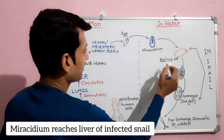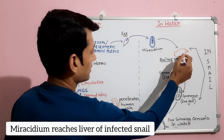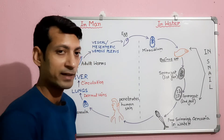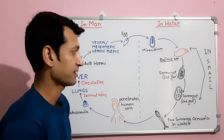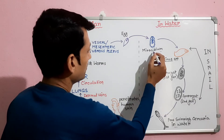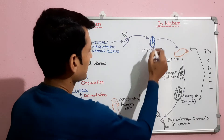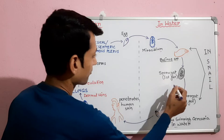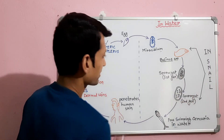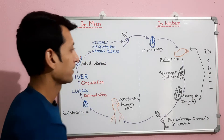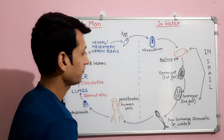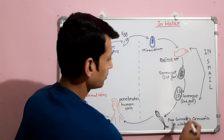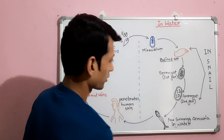The miracidium reaches the liver of the snail, where it undergoes developmental changes. The miracidium loses its cilia and other organs and is transformed into the first-generation sporocyst stage. Multiplication then occurs, and the first-generation sporocysts are transformed into second-generation sporocyst stage.